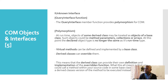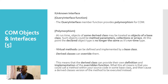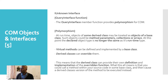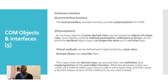So this is the definition of polymorphism. At runtime, objects of some derived class may be treated as objects of a base class. Such objects could be parameters, collections, or arrays. At this point, the declared object type is no longer the same as its runtime type.